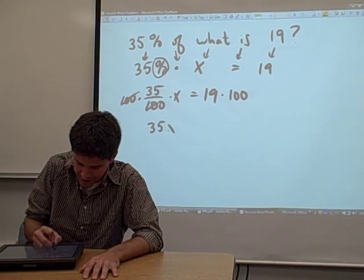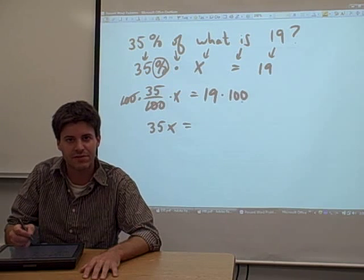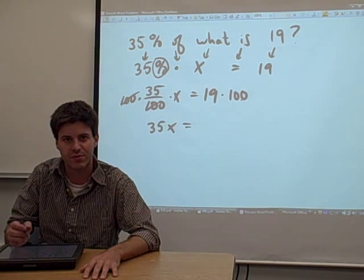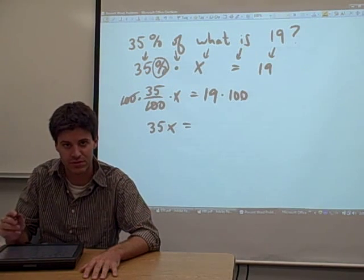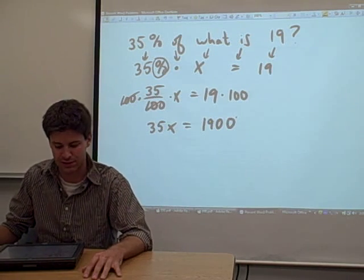So we have to multiply the right-hand side by 100 as well. What are we left with? We have 35x on the left-hand side when the hundreds cancel. 19 times 100 is easy to do. Anytime you multiply a number by 100, you just add a couple of zeros, or move the decimal two places to the right. So 35x equals 1900.